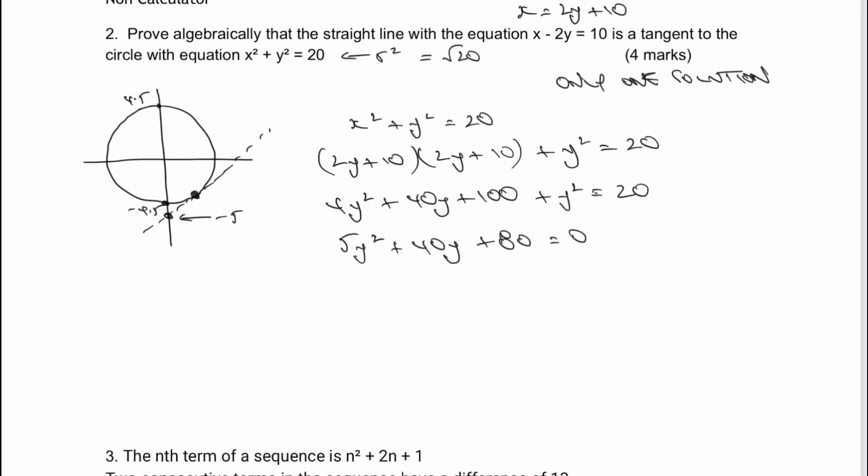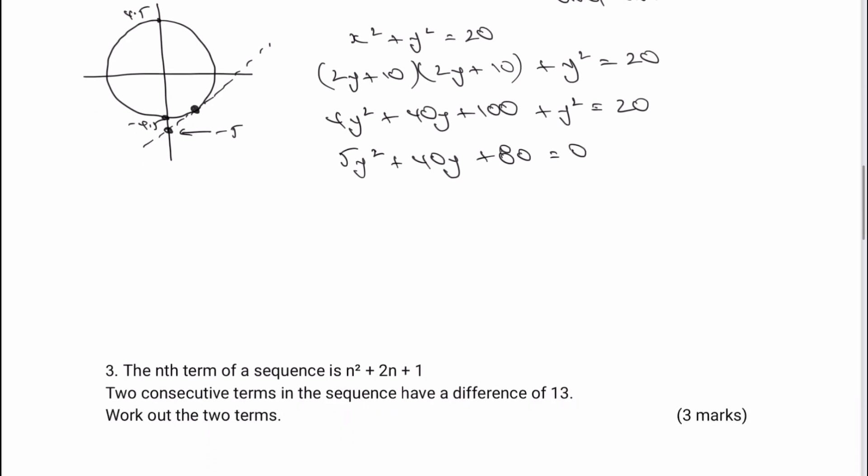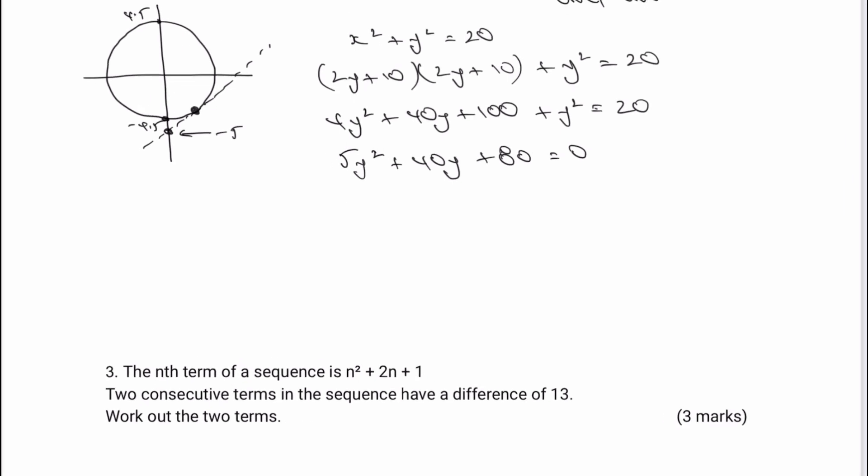Now, I appreciate things looked a little bit difficult at that point. But what you'll spot, hopefully, is that you can divide all of these terms through by 5. So I'm going to get y squared plus 8y plus 16 equals 0. And then when I factorize this particular equation, I'm going to get y plus 4 multiplied by y plus 4 equals 0.